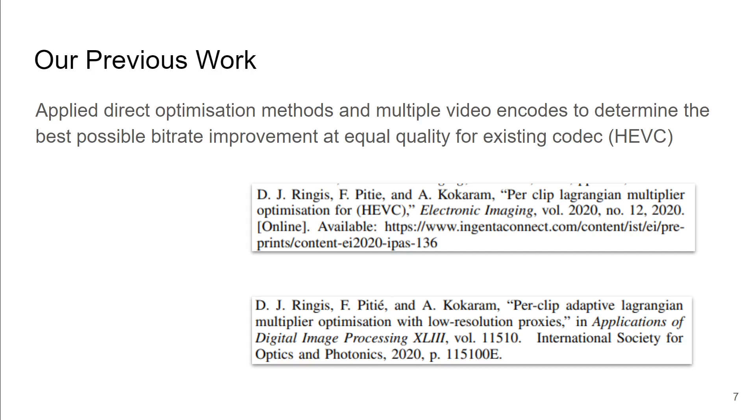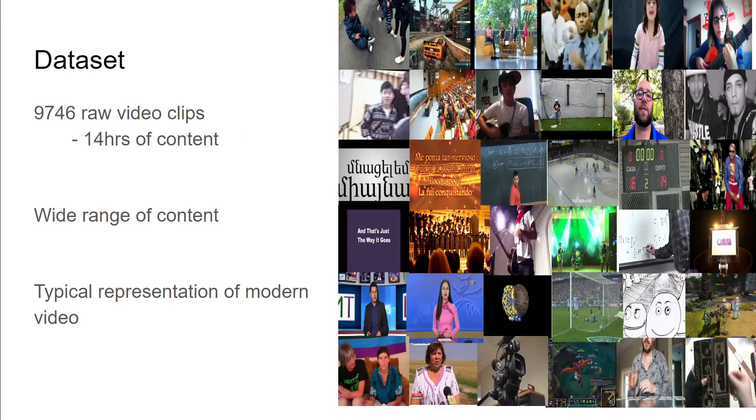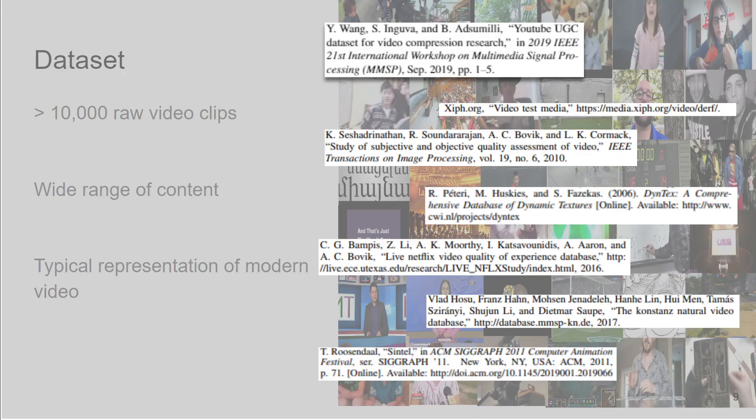We presented work on this at Electronic Imaging and SPIE last year where we applied direct optimization methods which required multiple video encodes to determine the best possible bit rate improvement at equal quality for an existing codec. We looked at almost 10,000 video clips. Each was five seconds long and had a wide range of content pulled from a number of datasets, with the majority coming from the YouTube user generated content dataset.